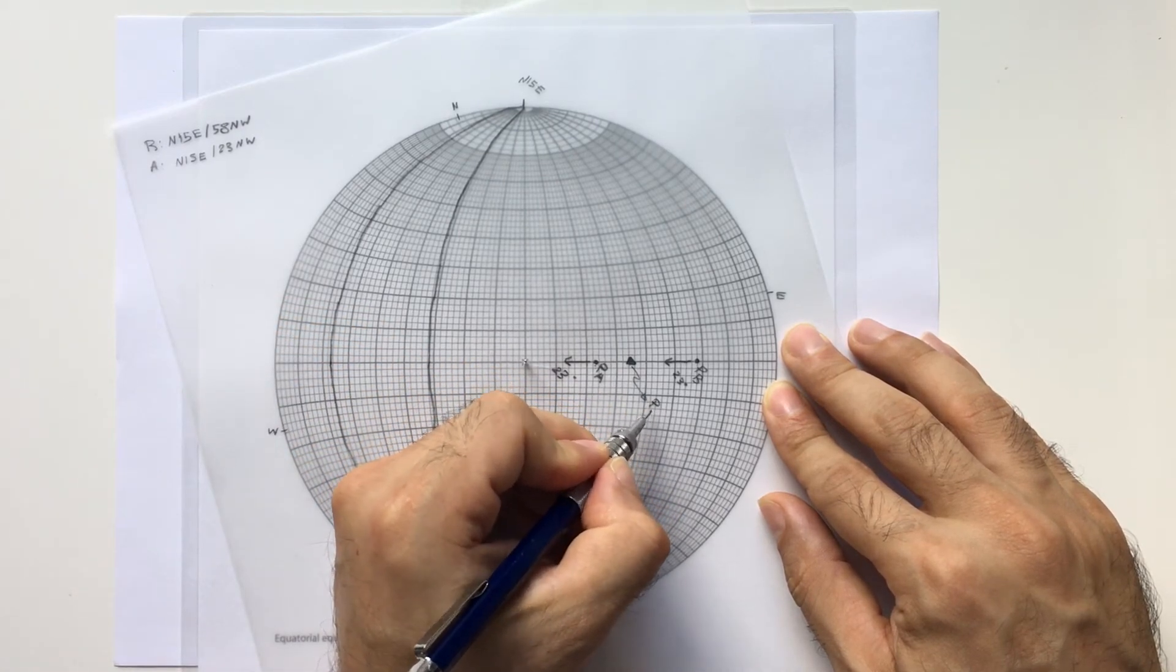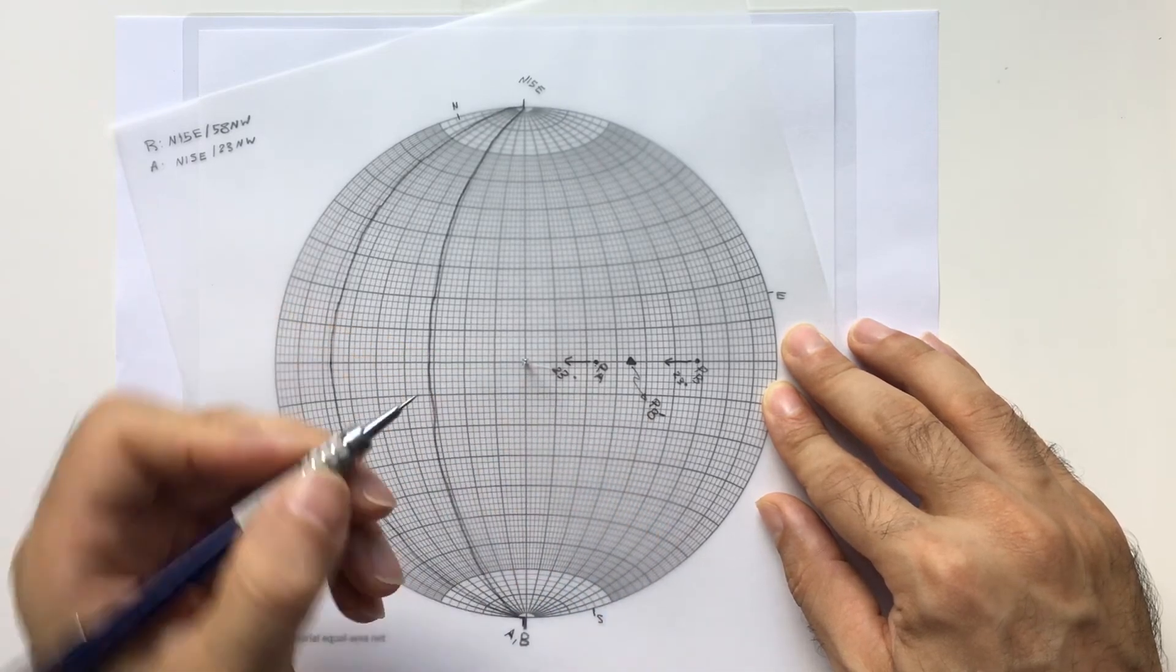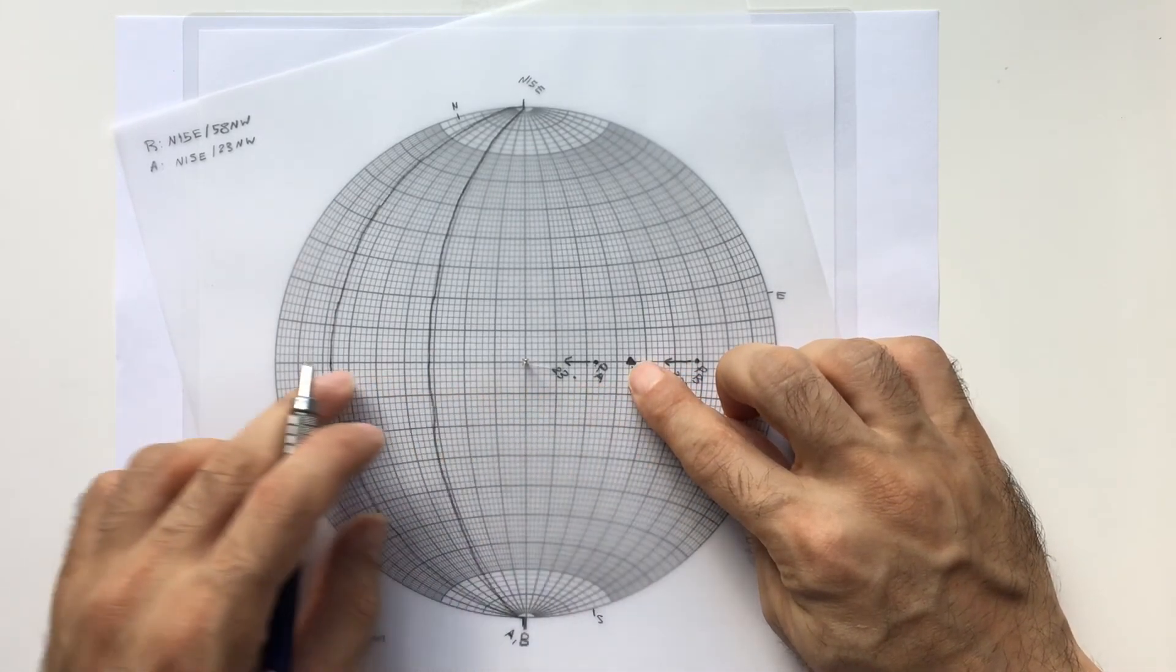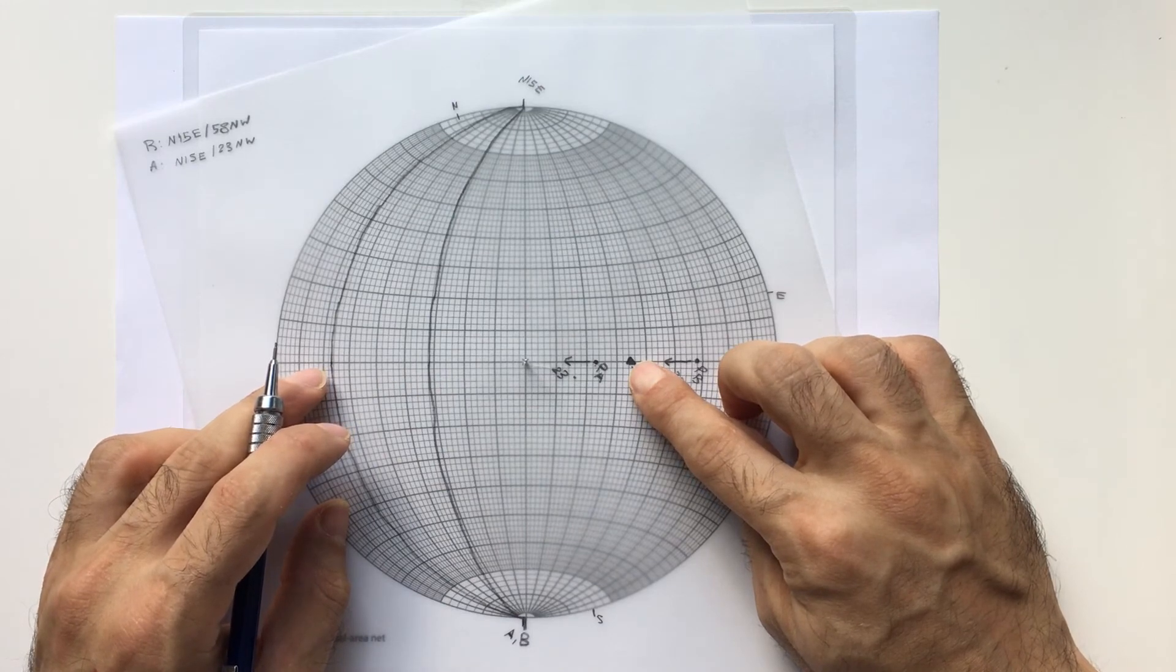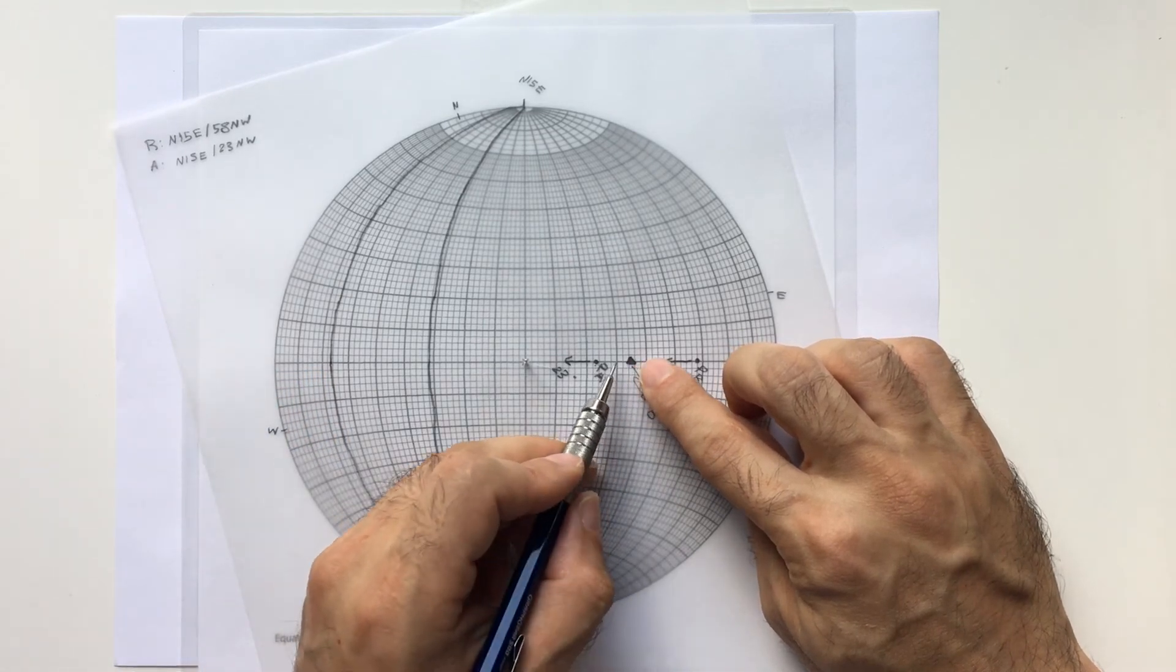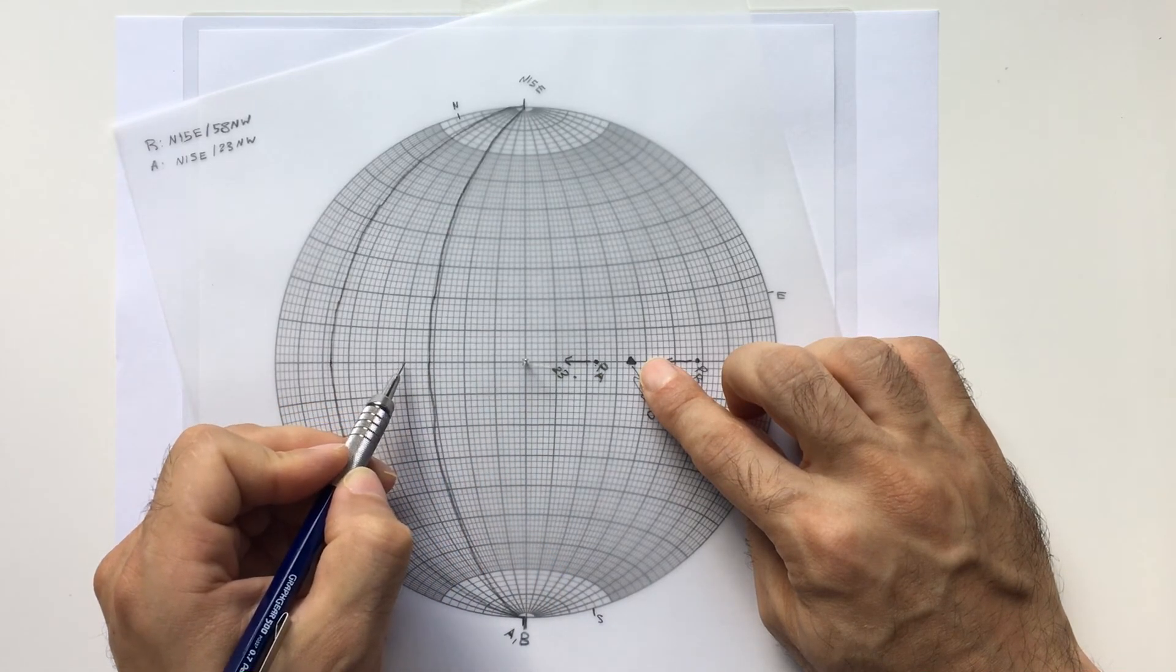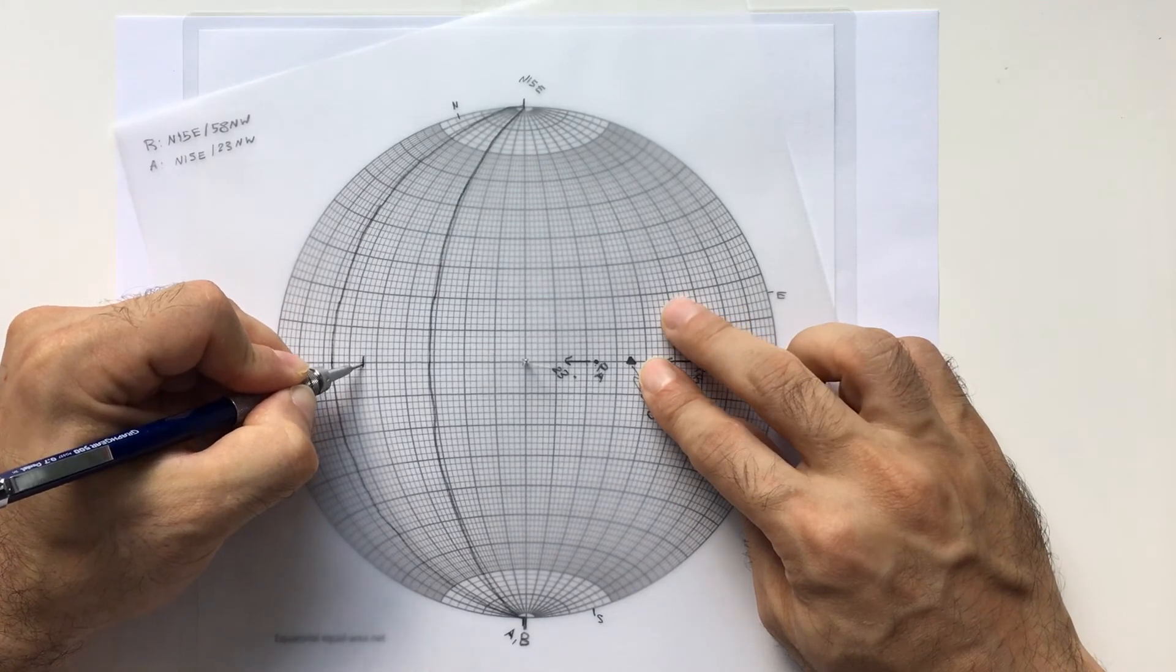This is the pole of the below unconformity, which I'm showing with B prime. If we want to read the attitude of the bedding from the pole, you count 90 degrees, and that would be your attitude of bedding after the first tectonic phase. This is 5, 15, 25, 35, 45, 55, 65, 75, 85, and 90. I'm going to show this one with the dash line.